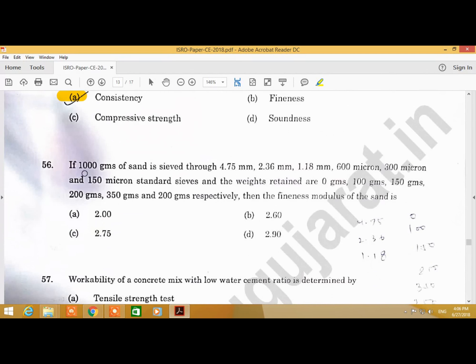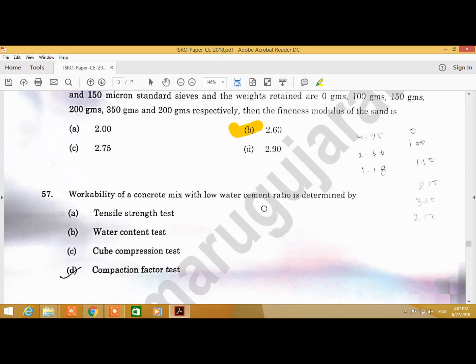Question Number 56: If 100 grams of sand is sieved through 4.75, 2.36, 1.18, 600, and 300 and 150 micron, and the weights retained are 150, 200, 350, and 200 grams respectively, the fineness modulus of the sand is. Answer is B, 2.60.